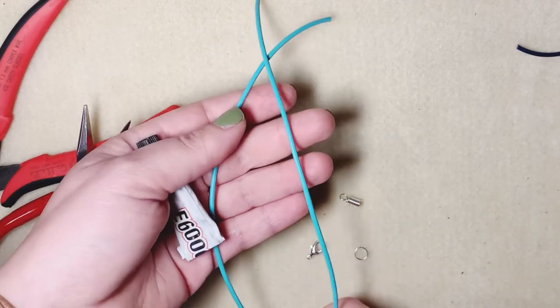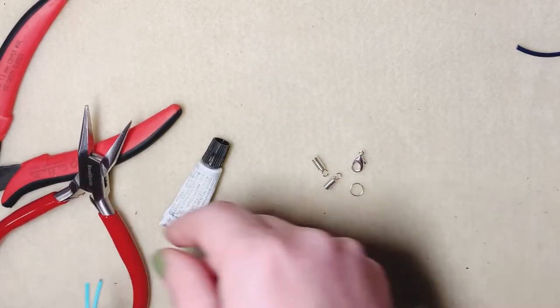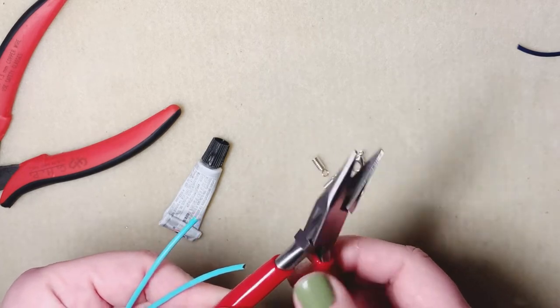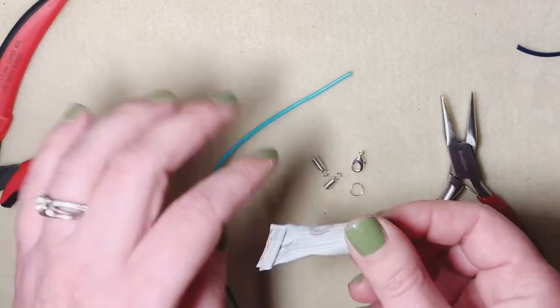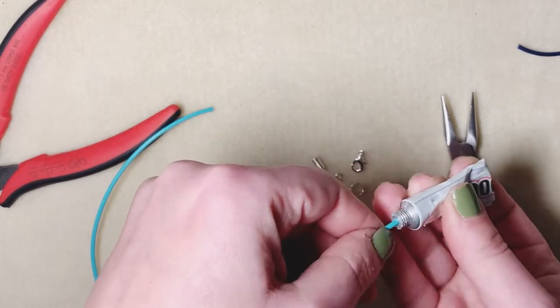To do this I'm going to use a little bit of E6000. I have 2 millimeter cord and 2 millimeter ends, then my clasp, and also I use just a chain nose plier to squeeze everything down and I'll list everything in the description below as well.